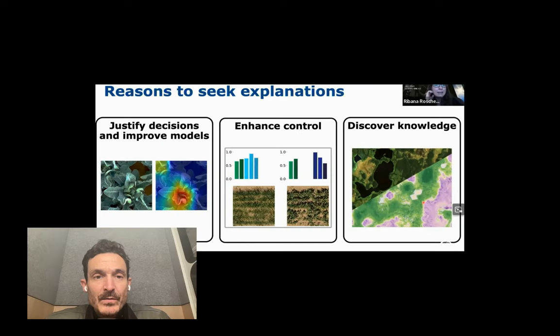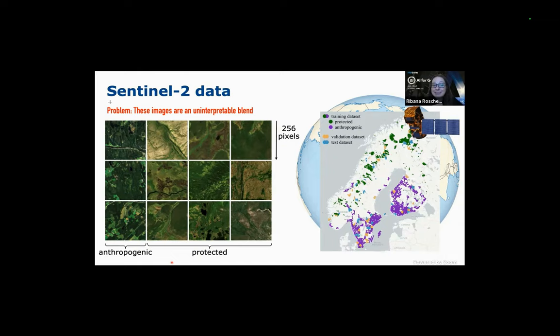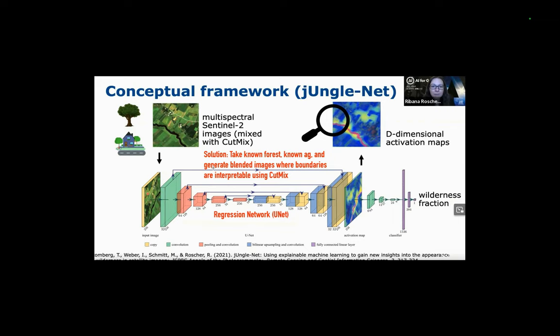Going back to our reasons to seek explanations, the last is to discover knowledge about new or undiscovered areas. As a case study for this, they wanted to identify wilderness characteristics. The issue is that there are no current methods of identifying wilderness in machine learning. They picked a study region and got satellite images identifying anthropogenic and protected regions, but the problem is it's a fuzzy mix — not necessarily all wilderness or non-wilderness, with features like lakes and rivers causing problems. To deal with this, they took known forest regions and known agricultural regions and generated synthetic blended images where the boundaries are interpretable.